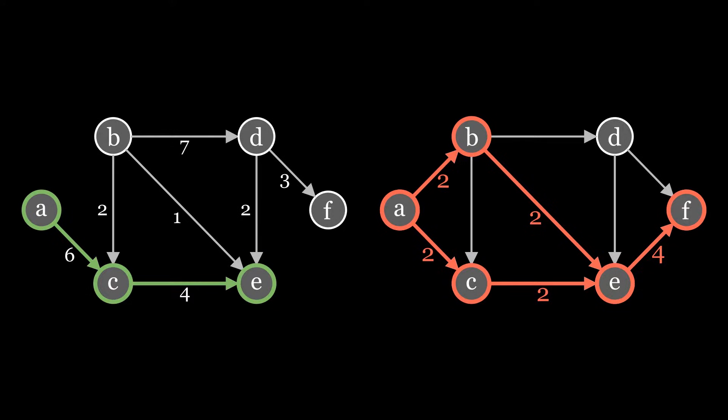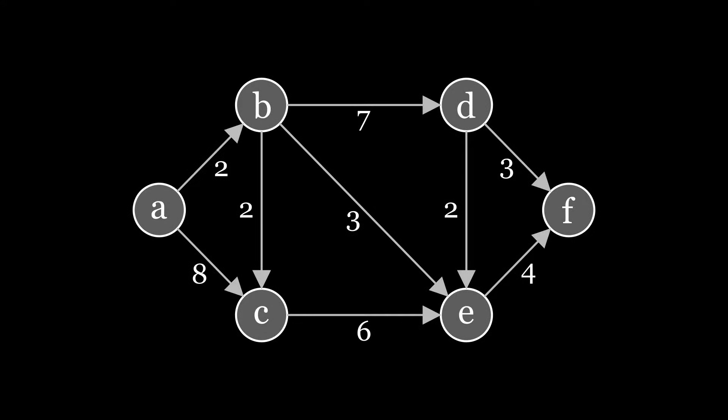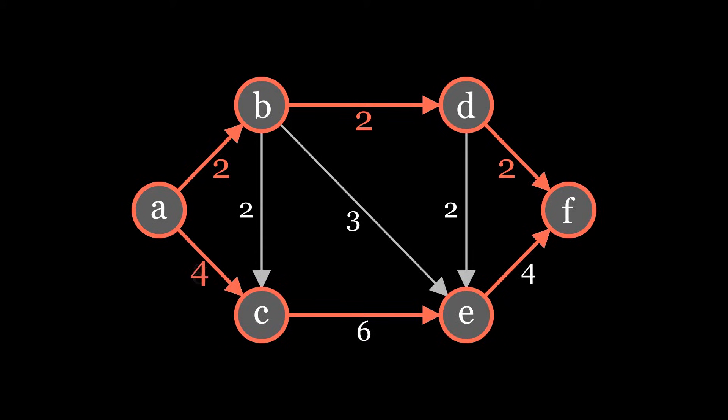The flow we got is 4, but this is not the maximum flow possible. This was caused by an unlucky choice of paths. Here we can see that by choosing different paths, we can get the maximum flow for this network, which is 6, given by the sum of the two selected paths.